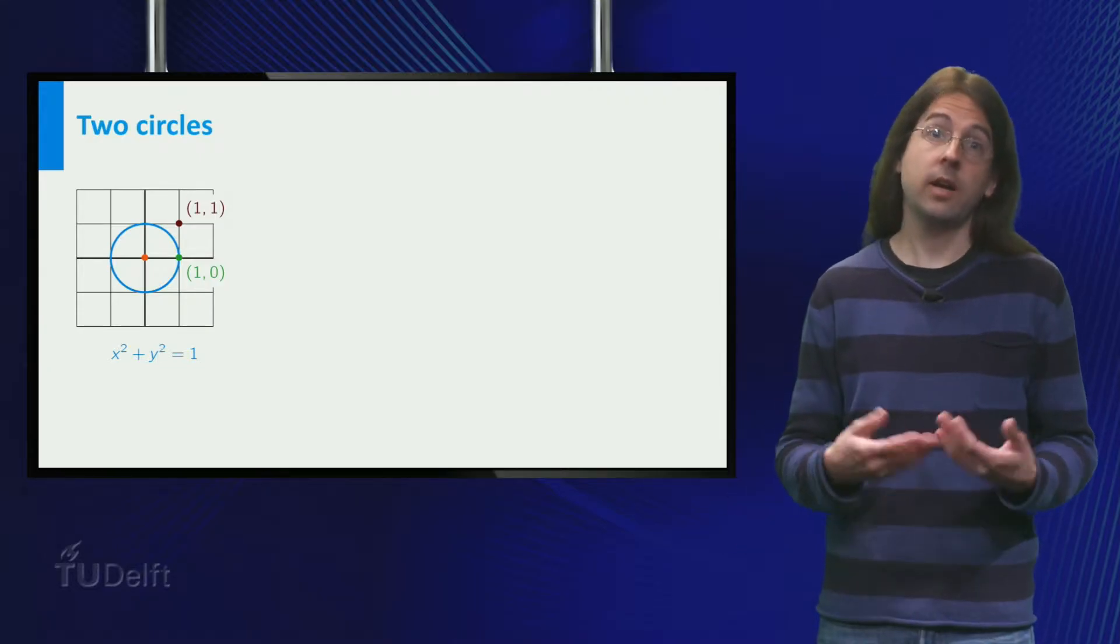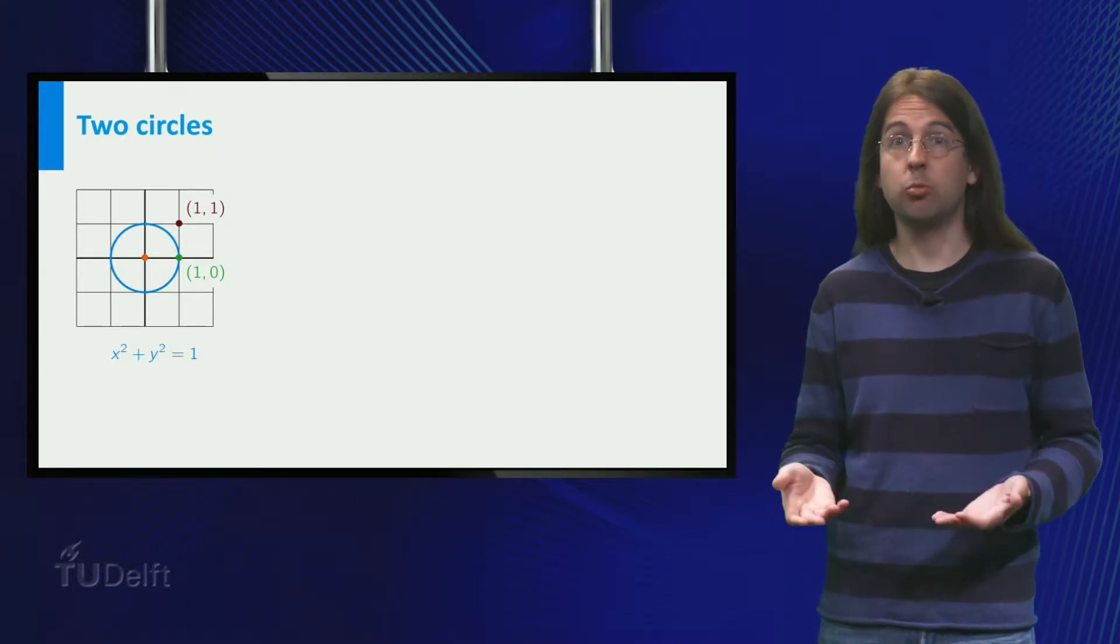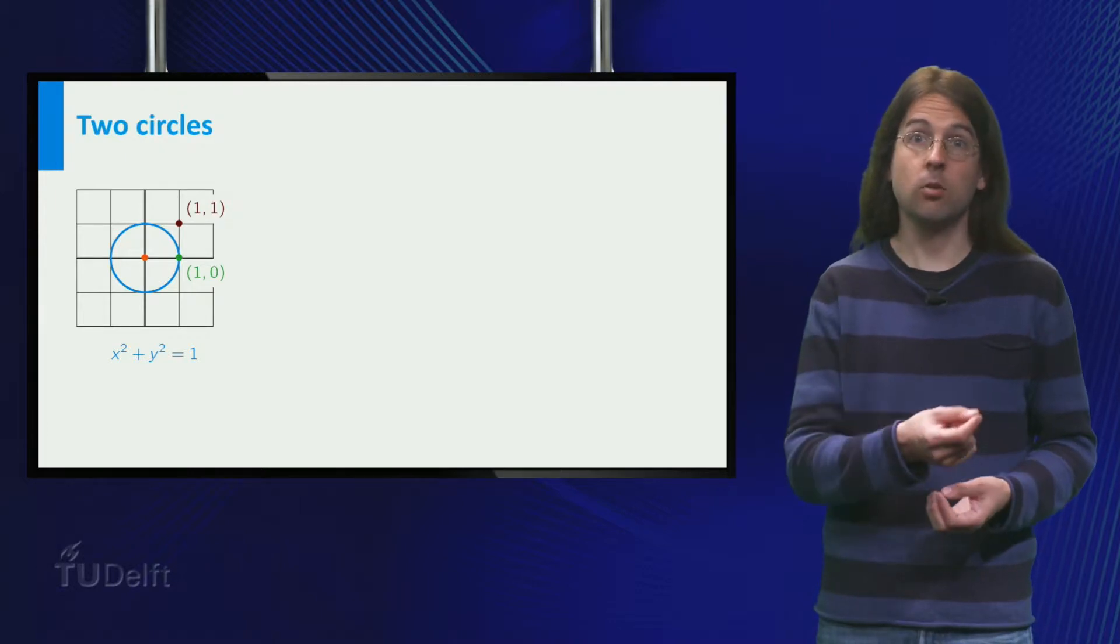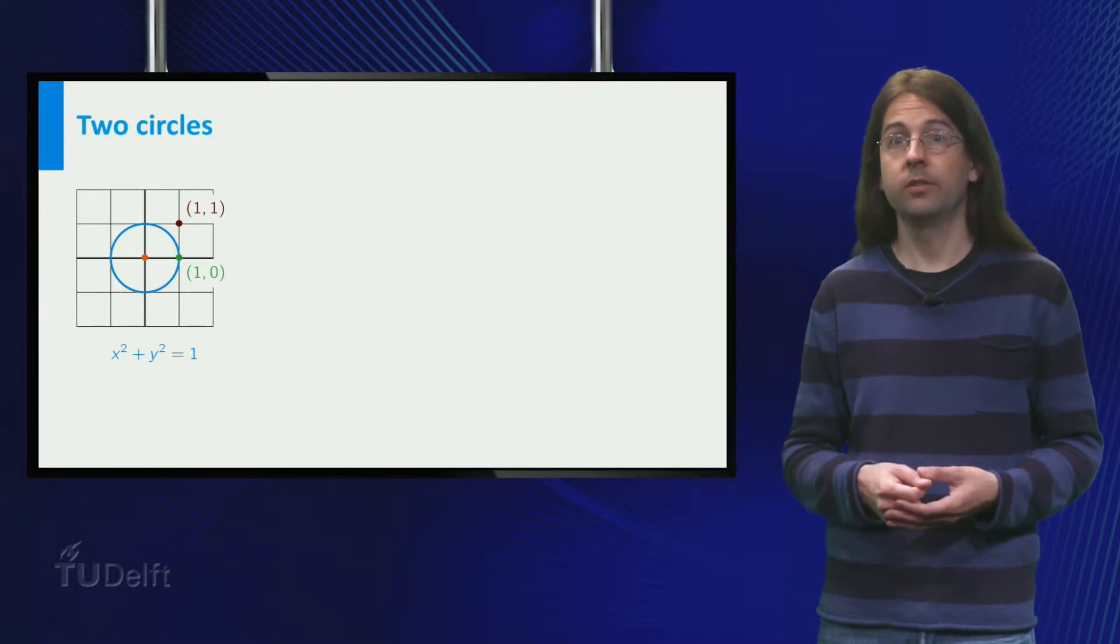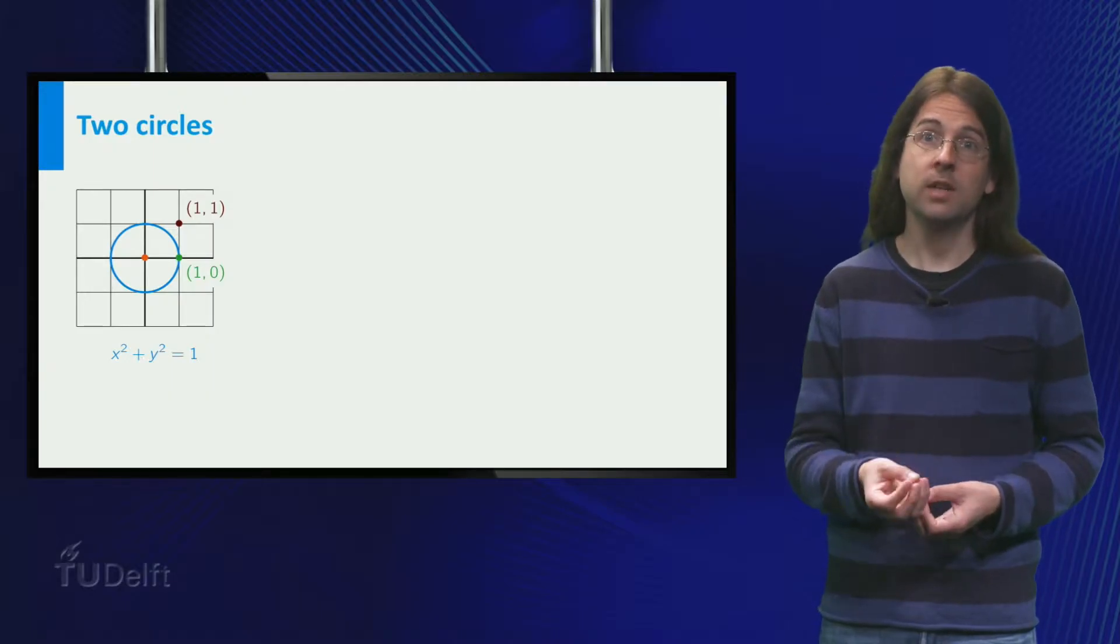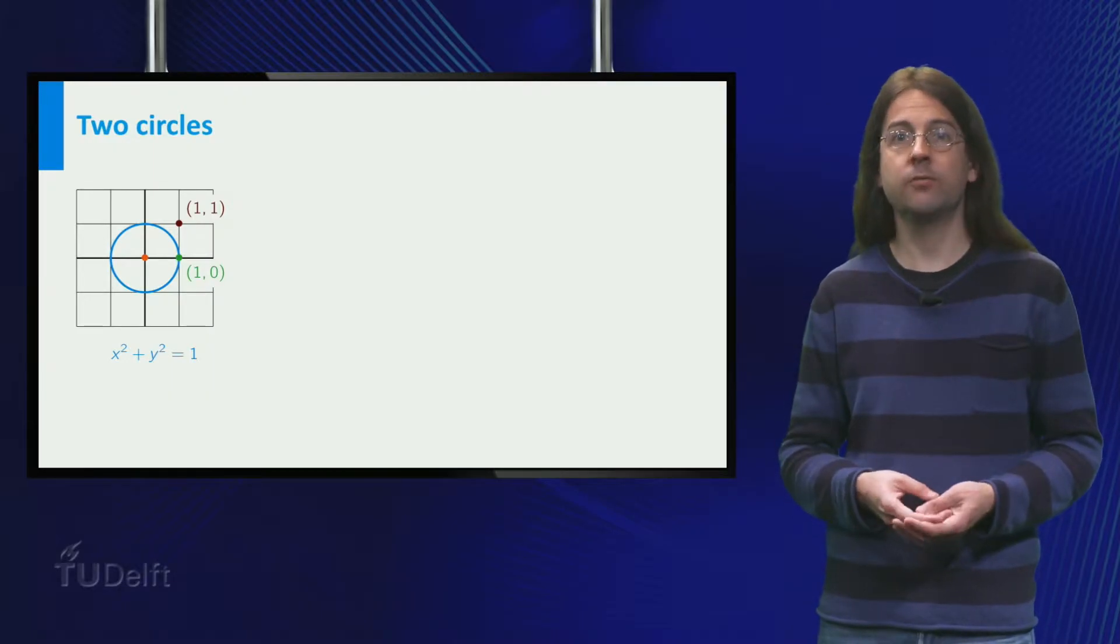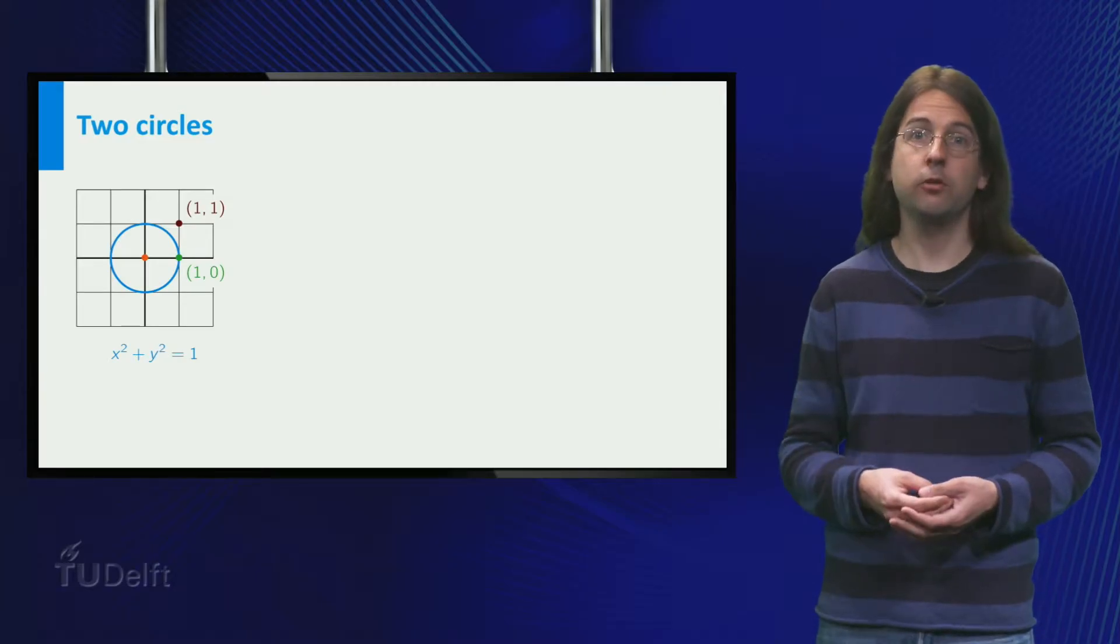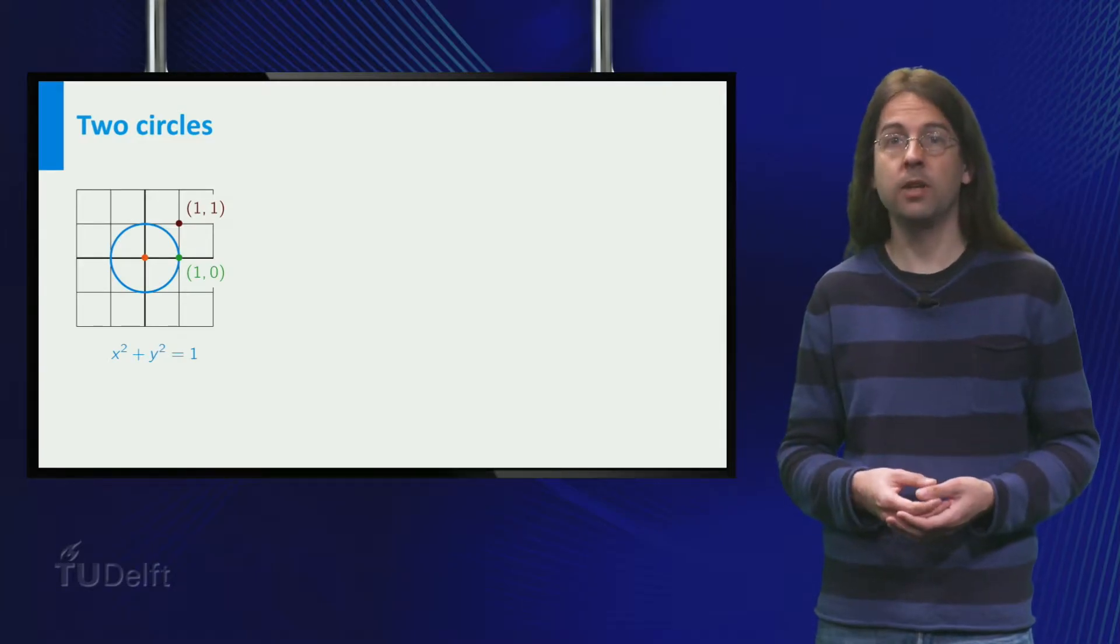So examples are x squared plus y squared equals 1, where the center is the origin and the radius is 1. Here a point x, y is on the circle exactly when the equation is valid, if we plug in those values for x and y into the equation.